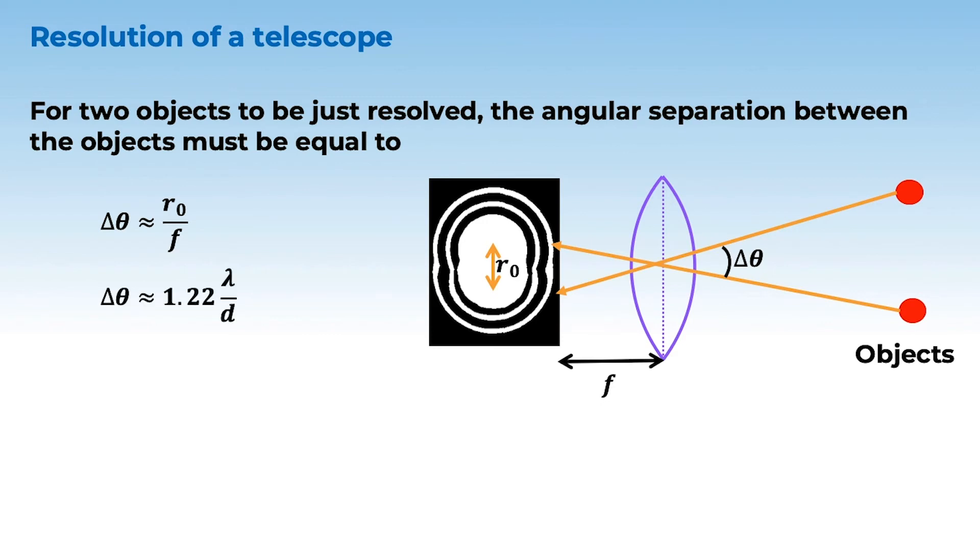So, delta-theta is 1.22 lambda by d. Hence, resolving power is inverse of this angular separation. When it is just resolved, it's 1 by delta-theta is d by 1.22 lambda for a telescope.